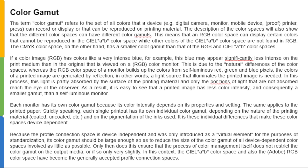Color Gamut. The term color gamut refers to the set of colors that a device — for example, a digital camera, mobile device, proof, printer, or press — can record, display, or reproduce on a printing material. The description of color spaces will also show that different color spaces can have different color gamuts. The CMYK color space has a smaller color gamut than that of the RGB and CIE Lab color spaces.